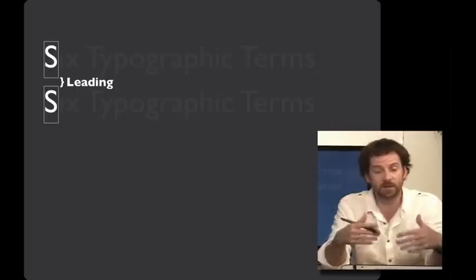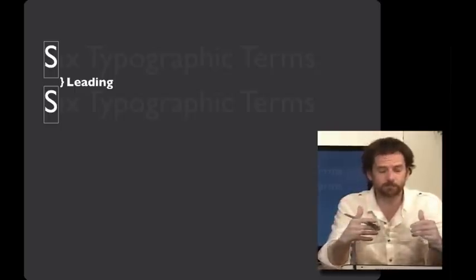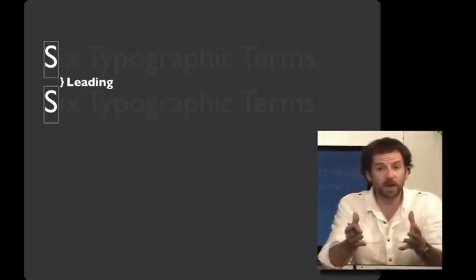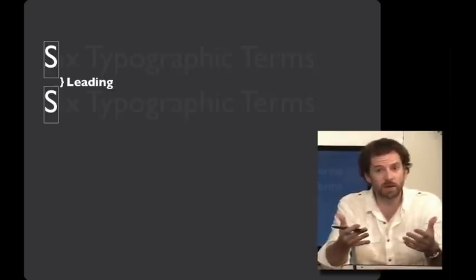Our second term is leading. If we have solid blocks of lead type that form the letters, the spacing that we get between the lines was achieved by putting thin strips of lead in between the lines. And that was called the leading. It's customary to have 20% of your font size as your leading. And so if in your word processor you set 10-point type, it will usually automatically add an extra two points of spacing to put 12 points in between each line.